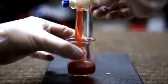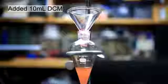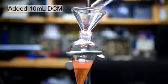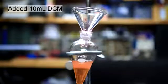The lower layer containing our desired product phenolphthalein is drained into a beaker. Then, 10 more milliliters of DCM is added to the aqueous layer in the separatory funnel. Again, the separatory funnel was capped, shaken, and vented, and then the layers were allowed to separate.